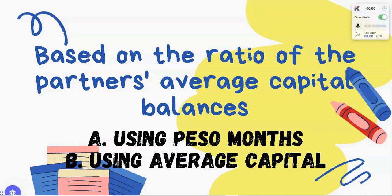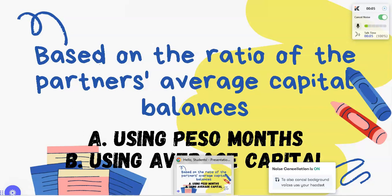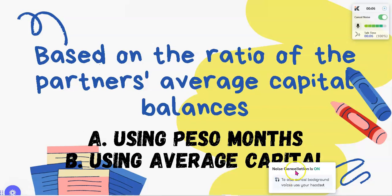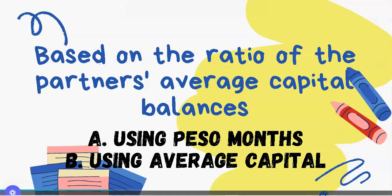Now that we are done with using peso months, we will now proceed on average capital — the ways on how to divide profit or loss using the average capital of the partners.